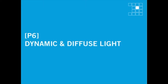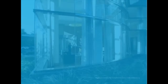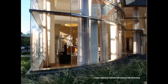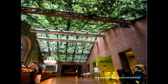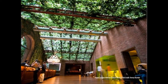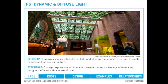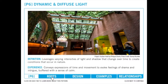A space with a good use of Pattern 6, Dynamic and Diffuse Light, varies light and shadow to convey expressions of time and movement and evoke feelings of drama and intrigue, buffered with a sense of calm. Lighting design has long been used to set the mood for a space, and different lighting conditions elicit different psychological responses.